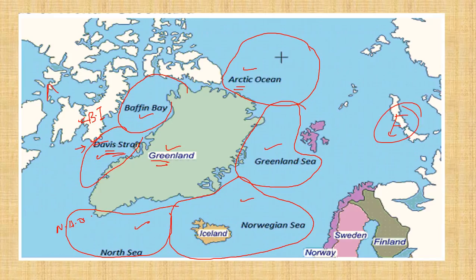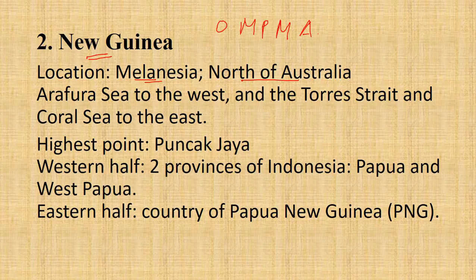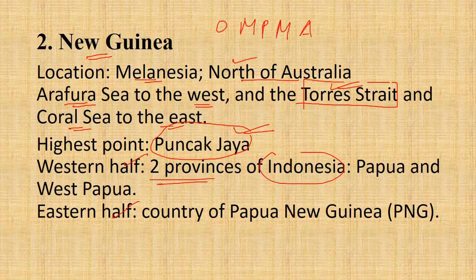Greenland lies on the western coast of Europe and east of Canada — more specifically, to the west of Europe and north of North America. Now for the second island, New Guinea: New Guinea lies to the north of Australia.